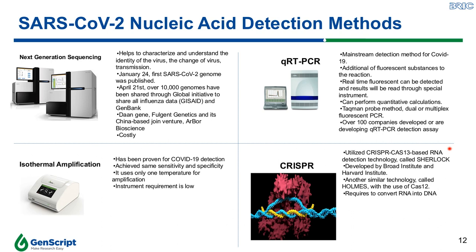Isothermal amplification has also been proven for COVID-19 detection without loss of sensitivity and specificity. Unlike qRT-PCR, which requires temperature changes during amplification, this technology uses only one temperature for amplification, and therefore the requirement for a special PCR instrument is low.